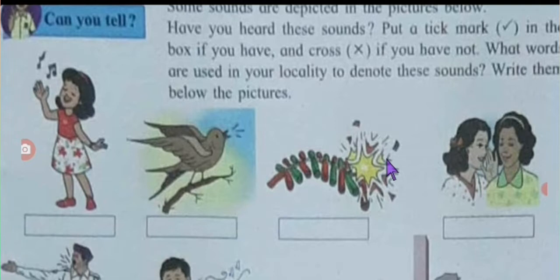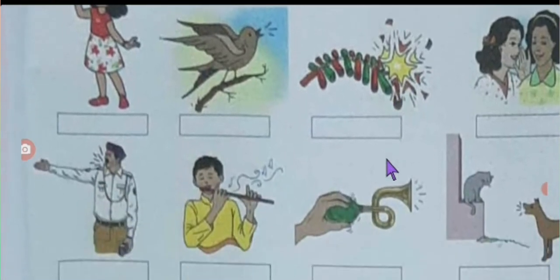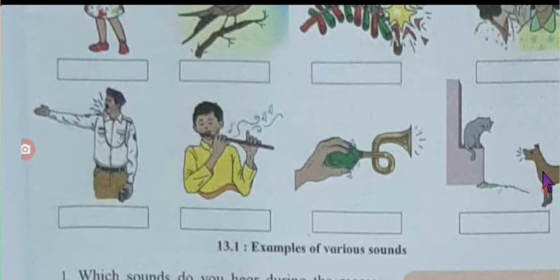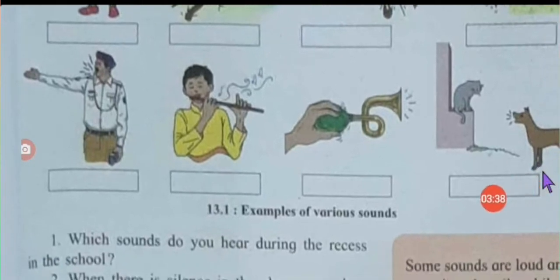Whispering is something that happens when two friends or many girls come together. The fifth picture is one we come across at every signal — a traffic police blowing a whistle. Another picture shows the melodious music being played by a boy on a flute. Then there is a picture of blowing a horn, and the last picture shows a dog barking when it sees a cat. These are all examples of various sounds.